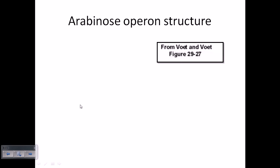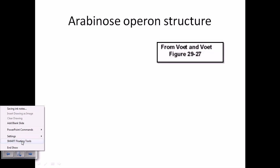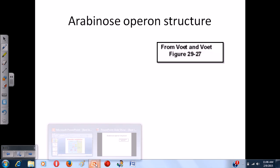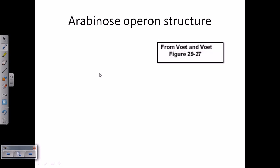What happens in the Arabinose Operon is it's about the breakdown of arabinose. Suppose there is arabinose present in the medium and you are a bacterium. You feed on arabinose, but you also feed on glucose. Glucose should be your first choice because it is the simplest kind of sugar and takes very little energy to break down. But if glucose is absent, you have arabinose to feed on, so you break down arabinose. The Arabinose Operon is a construction of genes that will help produce enzymes that break down arabinose into a simpler form so you can metabolize it and produce energy.